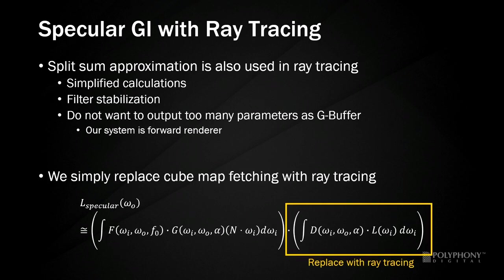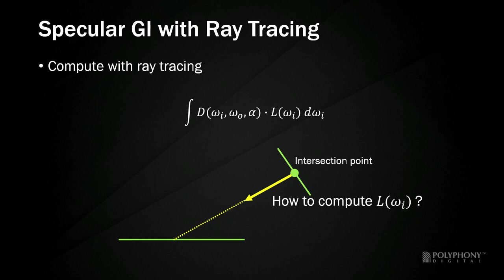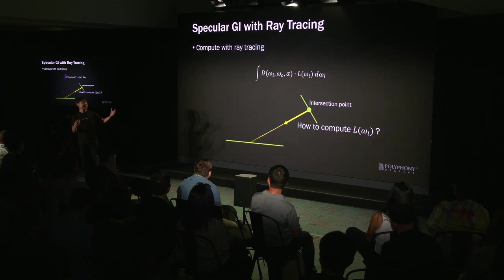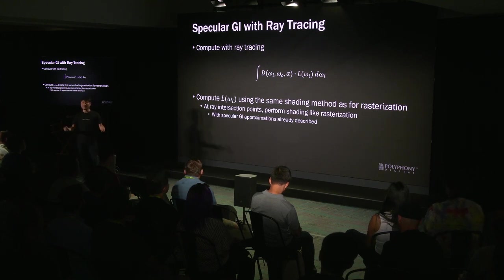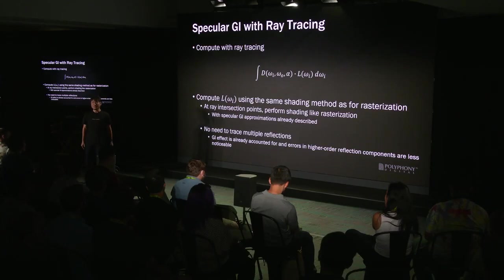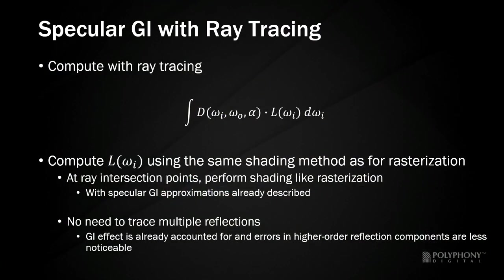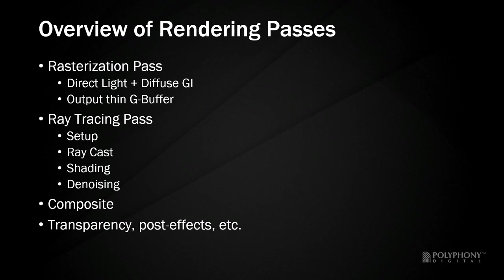The integration is calculated using ray tracing, and the problem is how to compute the radiance L from the intersection point. To compute the radiance, we approximate it with the same shading method we use for rasterization. At the intersection point, we do shading like rasterization instead of recursively ray tracing. The accuracy will be lower, but a certain amount of GI effect is already accounted for and errors in higher-order reflection components are less noticeable. Therefore, only one ray tracing step is performed.